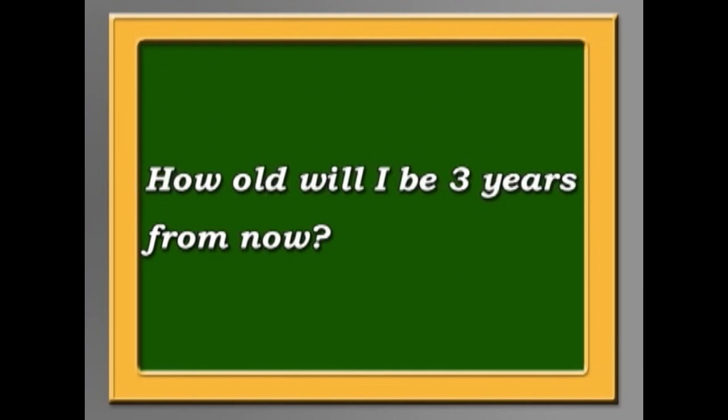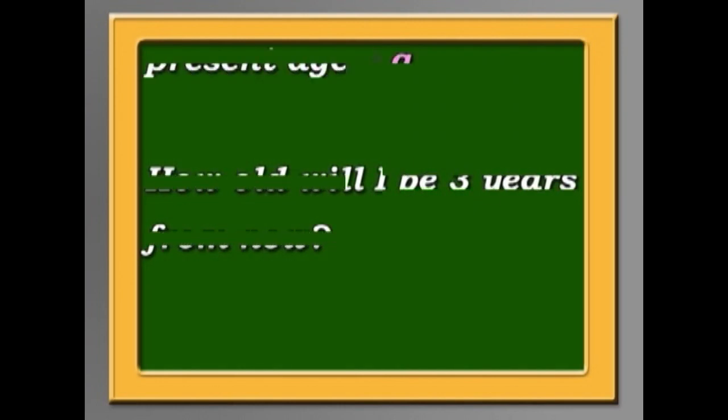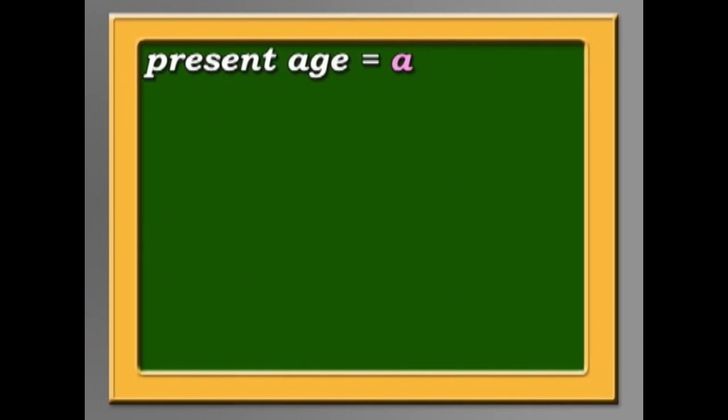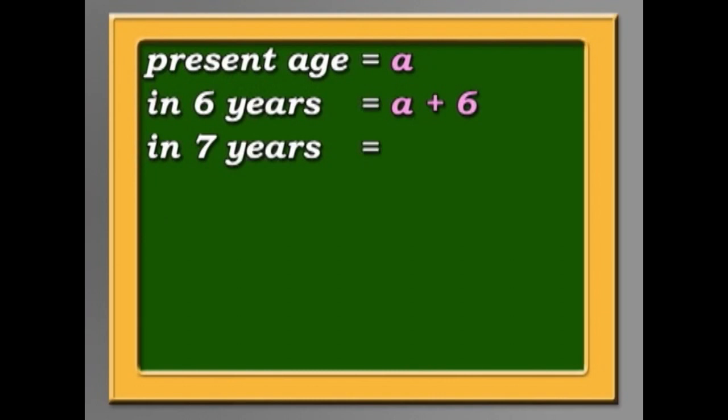That sounds complicated, doesn't it? But let's do it together. Let's call my present age A. So six years from now, I'll be A plus six. And seven years from now, I'll be A plus seven.